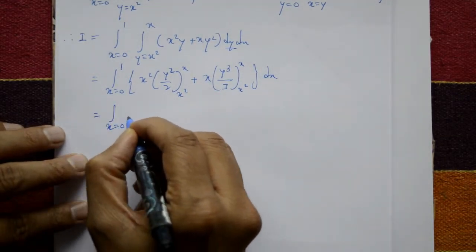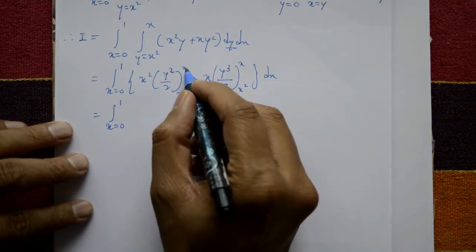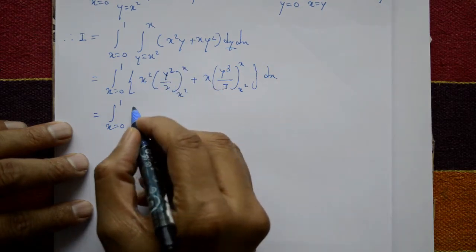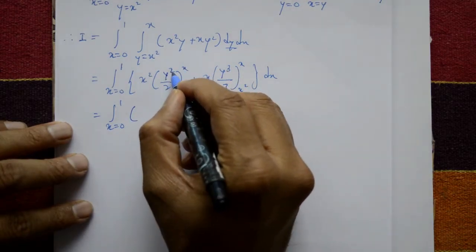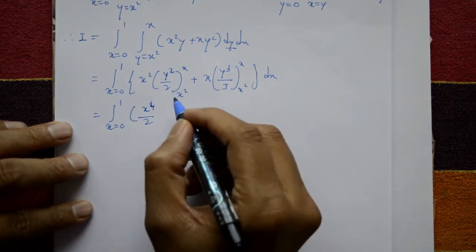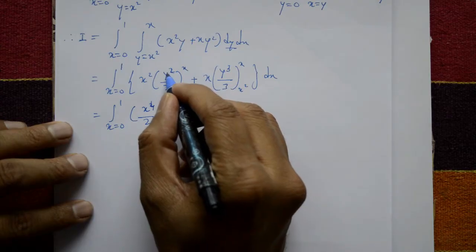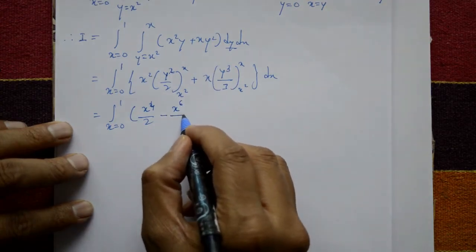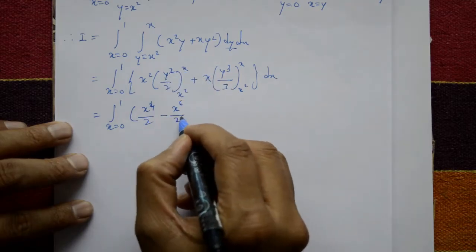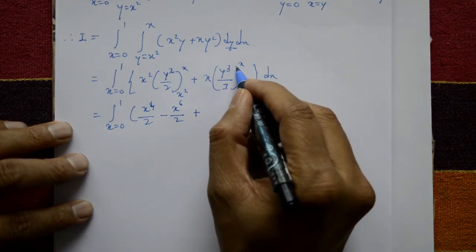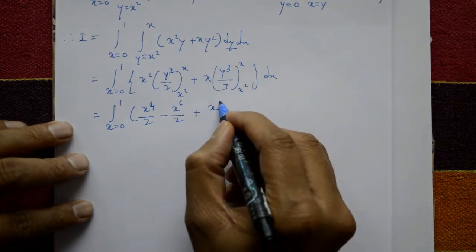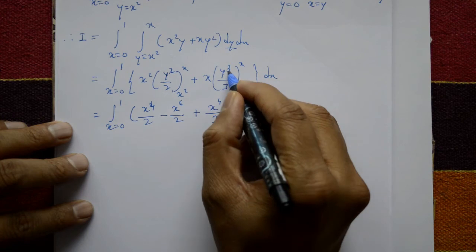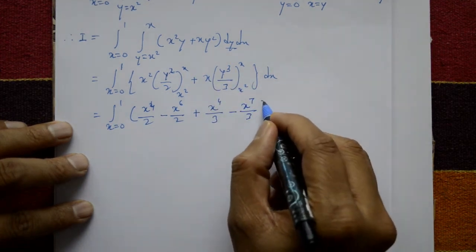After applying the limits, put upper limit y equals x: x squared times (x squared by 2) gives x to the 4 by 2, and x times (x cubed by 3) gives x to the 4 by 3. Put lower limit y equals x squared: x squared times (x to the 4 by 2) gives x to the 6 by 2, and x times (x to the 6 by 3) gives x to the 7 by 3. Integrate this expression with respect to x.